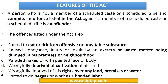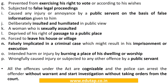The Scheduled Caste and Scheduled Tribes Prevention of Atrocities Act 1989 lists a number of actions and events as offences under it. Just go through them for a brief idea — there is no need to remember them.